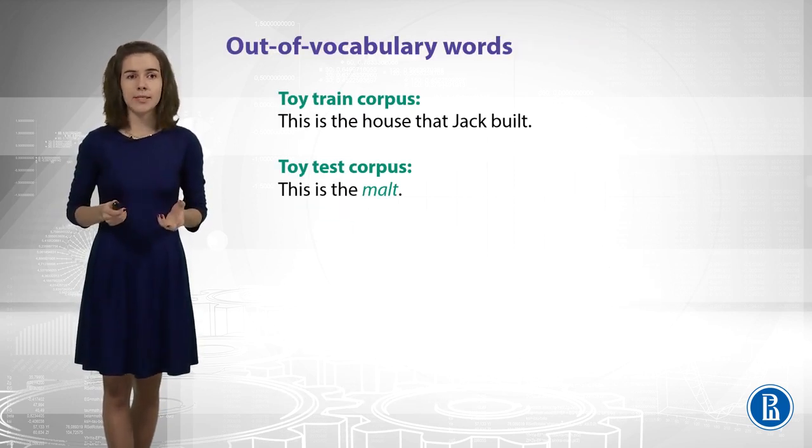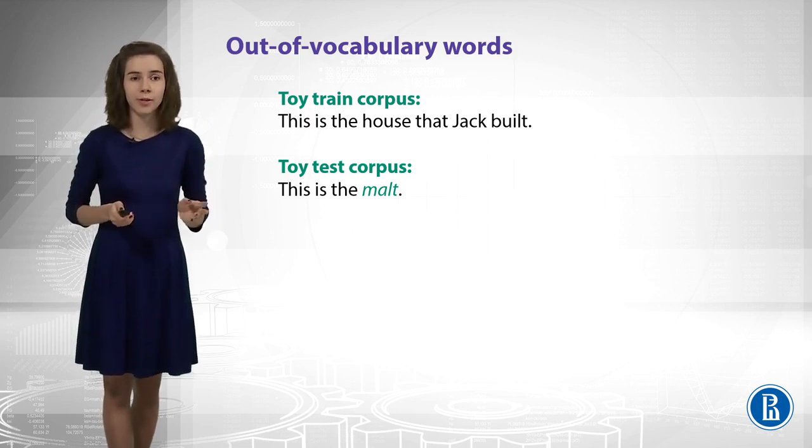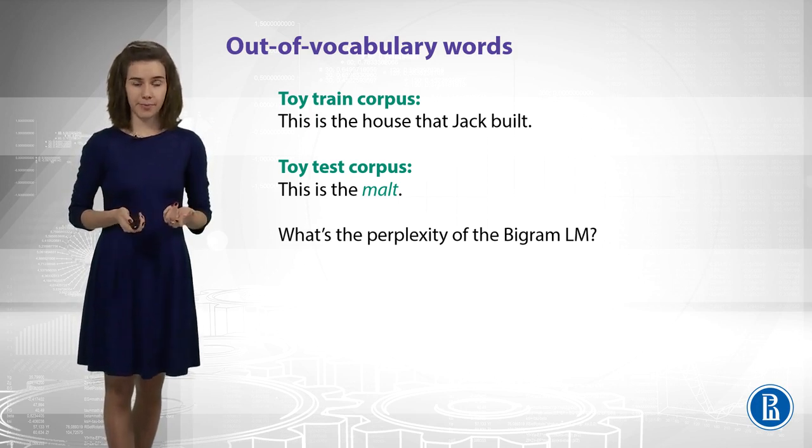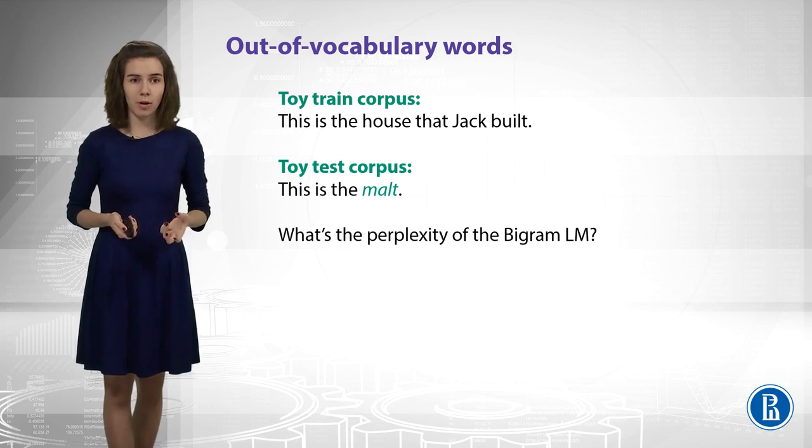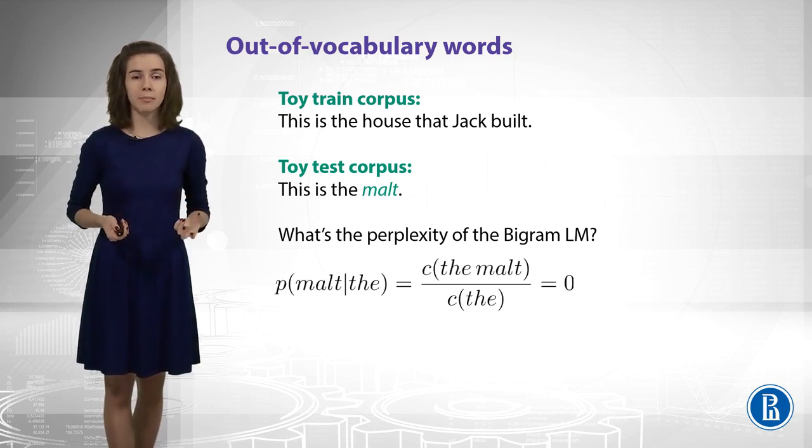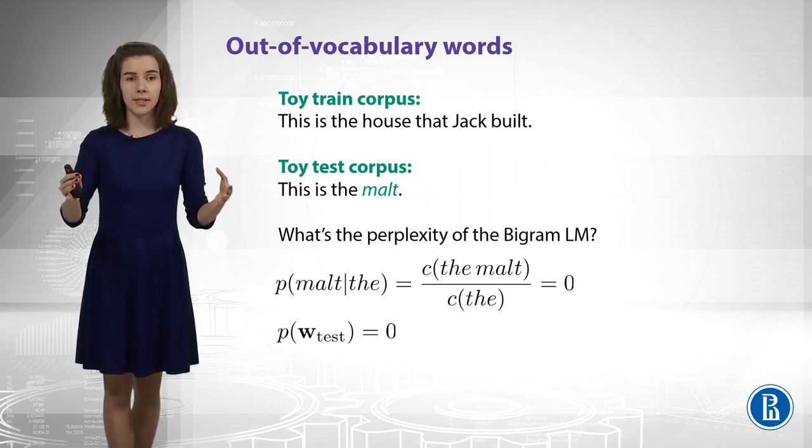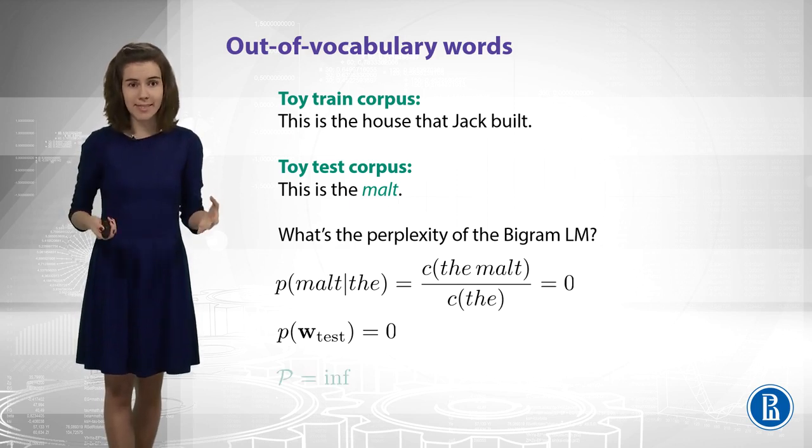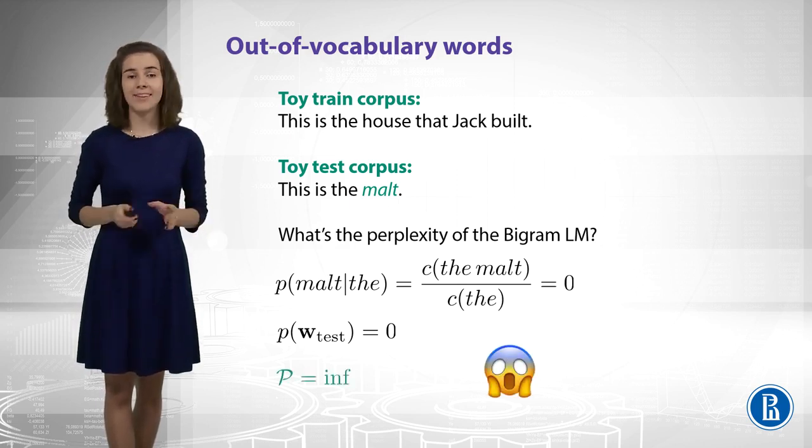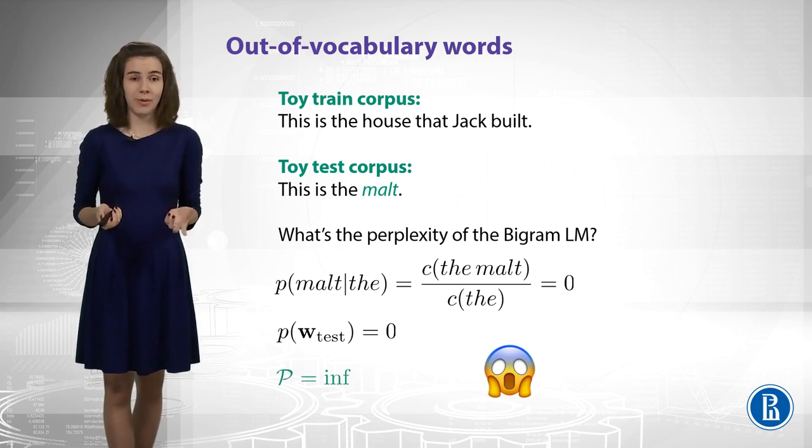Let us try to compute perplexity for some small toy data. So, this is some toy train corpus and toy test corpus. What is the perplexity here? Well, we should start with computing probabilities of our model. So, I compute some probability and I get zero. It means that the probability of the whole test data is also zero. And the perplexity is infinite. And that's definitely not what we like.